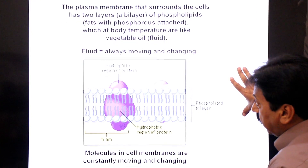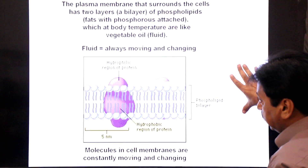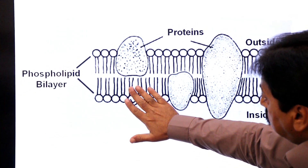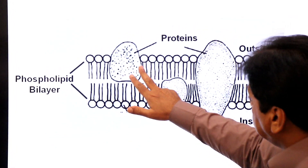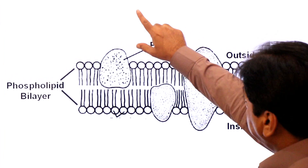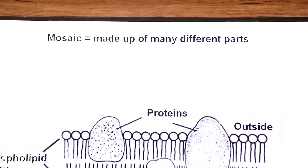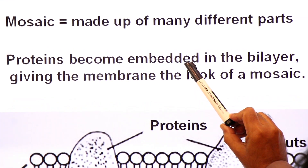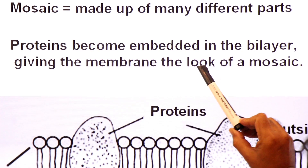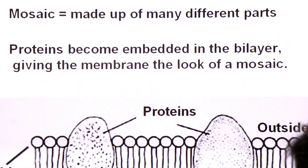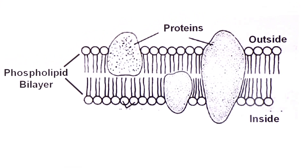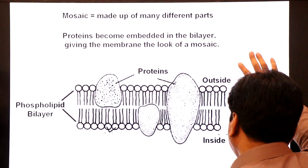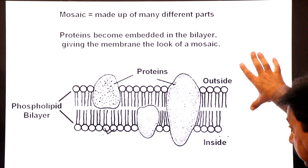The mosaic part refers to the proteins. Within the phospholipid bilayer, some smaller and larger protein pieces are present. The word 'mosaic' means made up of many different parts. Proteins become embedded — that is, attached — in the lipid bilayer, giving the membrane the look of a mosaic. So: fluid portion = lipid bilayer, mosaic = proteins.